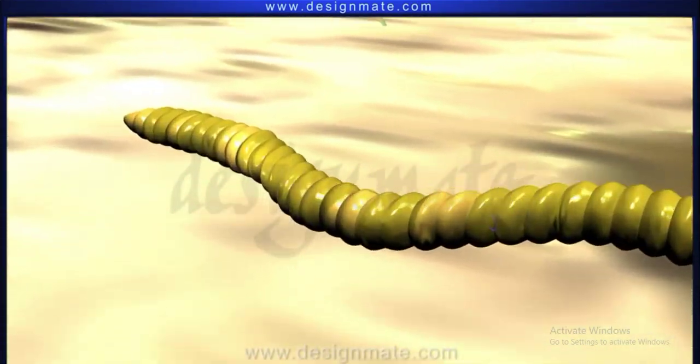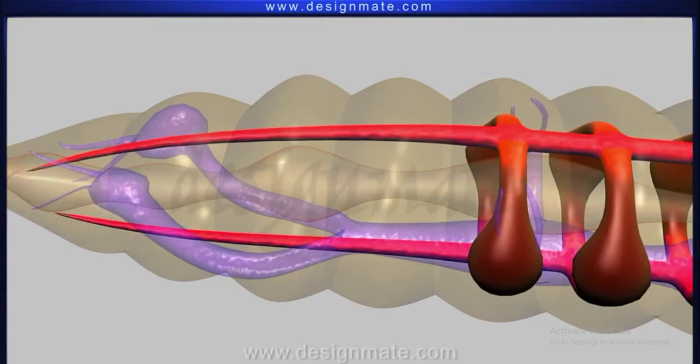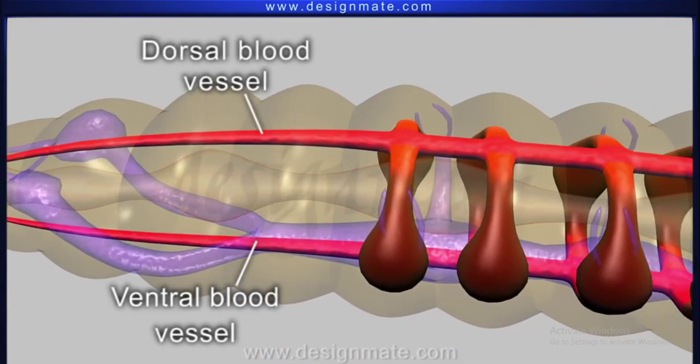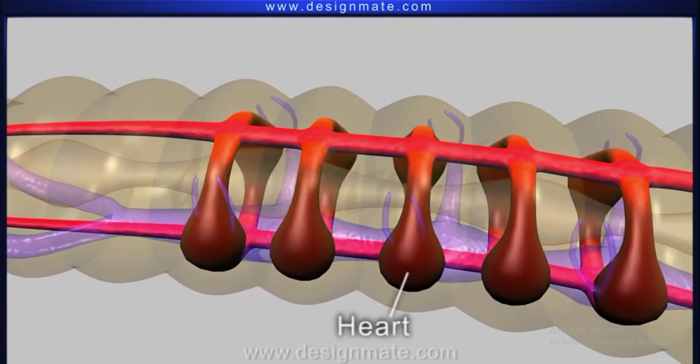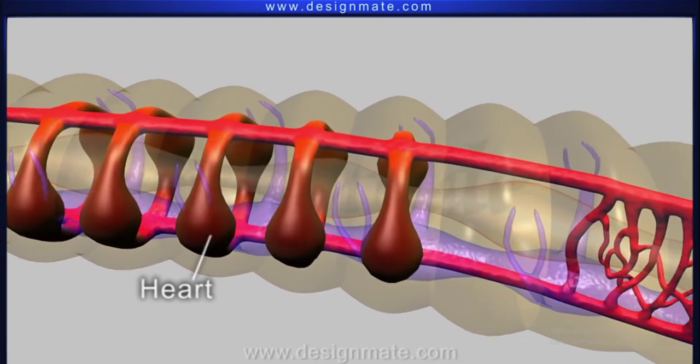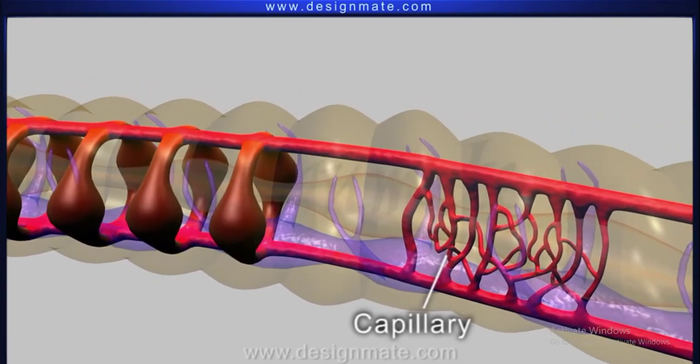The earthworm has a closed blood vascular system comprising blood vessels, numerous hearts, and capillaries.